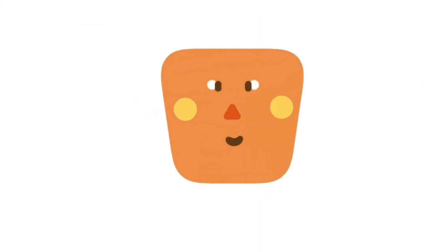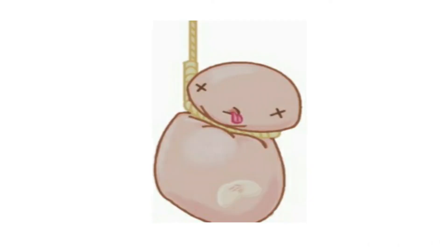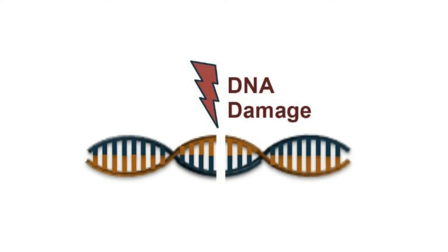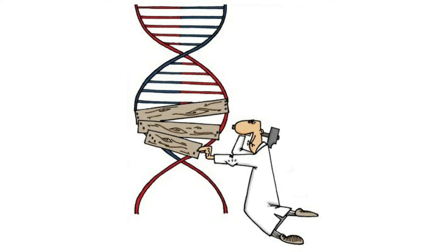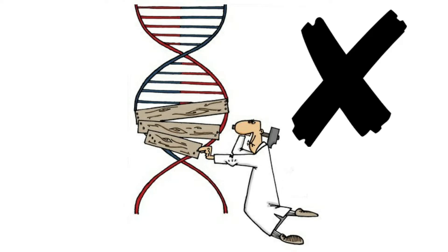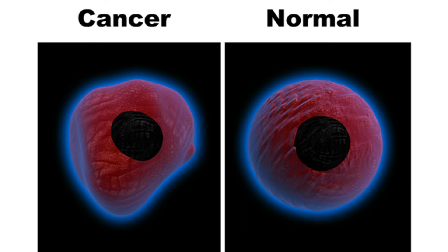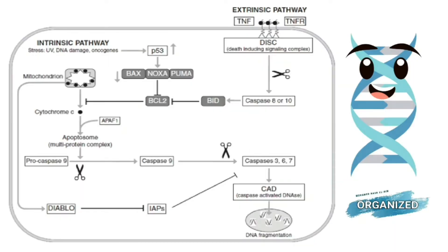Now we need to ask why this process happens — why normal cells die, or to be more specific, why normal cells commit suicide. Every day our DNA is exposed to a lot of mutations which may damage it. Fortunately we have a defense mechanism called a repair mechanism which can repair this DNA damage. But if this repair mechanism cannot repair the damage, it leads to an increase in mutations which may convert normal cells into cancer cells. So normal cells commit suicide — apoptosis — to avoid this transformation from happening.